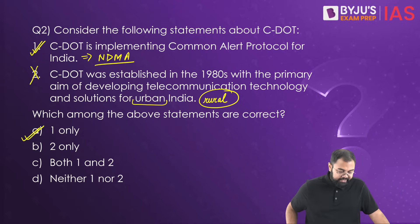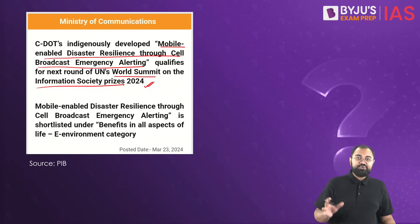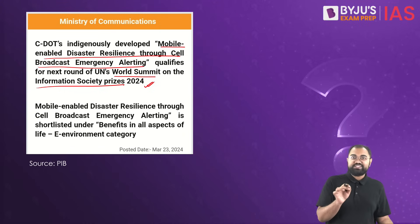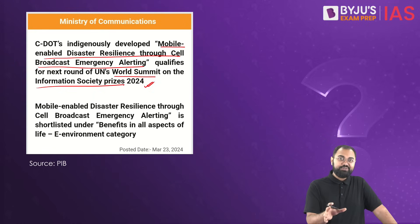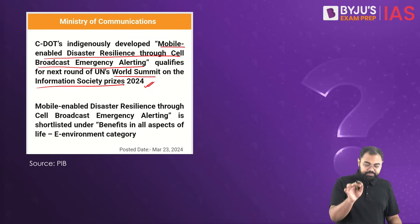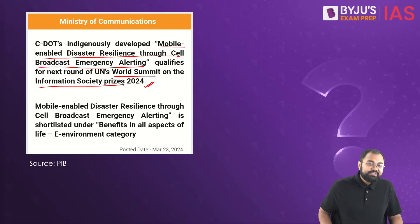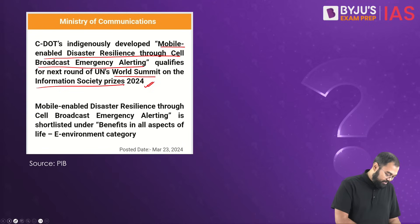Only the first statement is completely correct. Additionally, there is an appeal: if you go to PIB, there is a link provided where you can register and cast your vote for C-DOT to win the prize at the UN. PIB has given step-by-step instructions on how to vote. Please go and do that — I've already cast my vote in favor of this initiative.